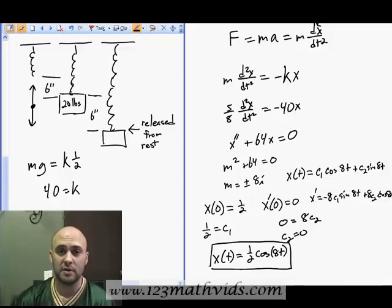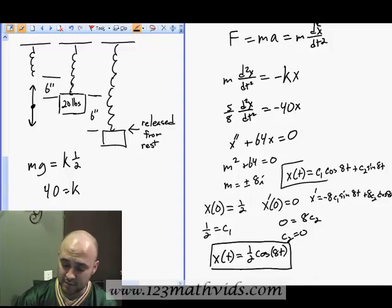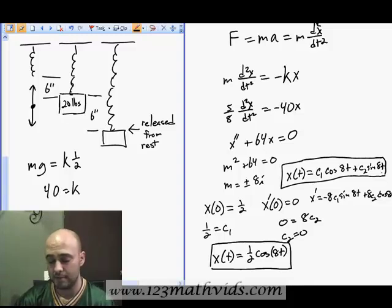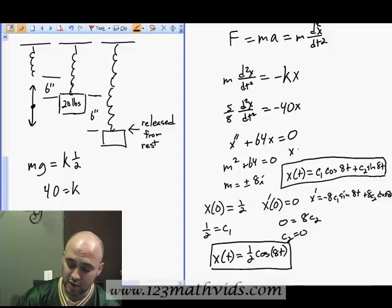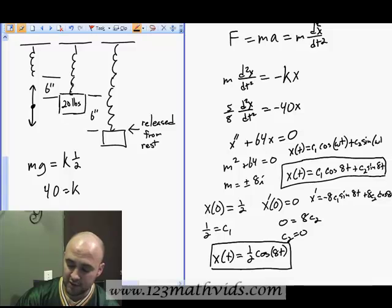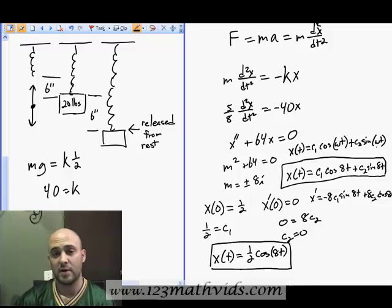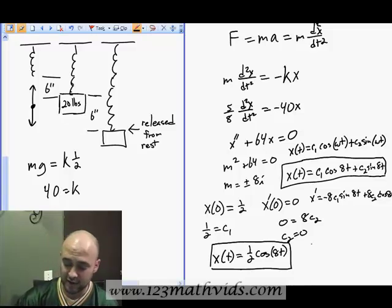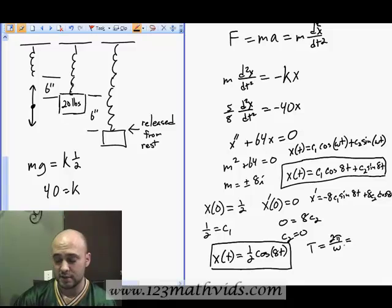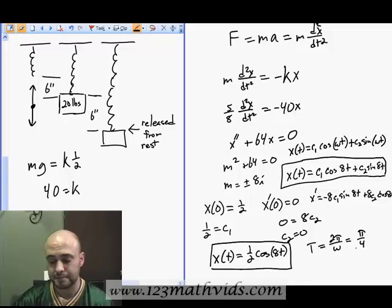Something else we can determine is the period. In other words, this thing is oscillating, and we want to find the period. We can find that from the general equation. In the general case, we have a solution that looks like cosine of omega t plus sine of omega t. We can see that omega is 8. So to find the period, that's 2 pi divided by omega. In our case, the period would be pi over 4.